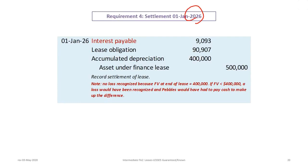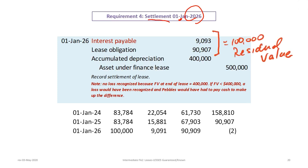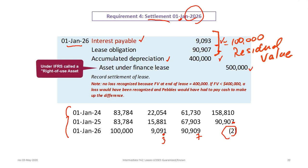Jumping to January 1, 2026, when the lease settles: debit interest payable $9,093 (adjusted from the table's $9,091 to resolve a $2 rounding difference built into the payment), debit lease obligation $90,907, debit accumulated depreciation $400,000, and credit the asset under finance lease $500,000. The interest payable and lease obligation together equal the $100,000 guaranteed residual, and the difference between accumulated depreciation and the asset also equals the residual. That completes the settlement.